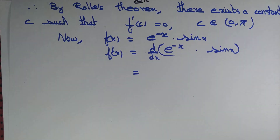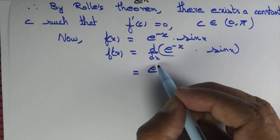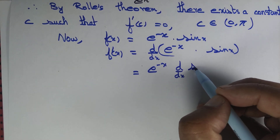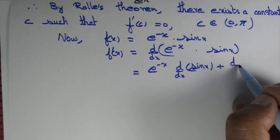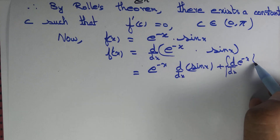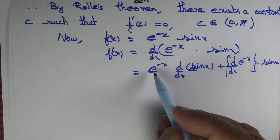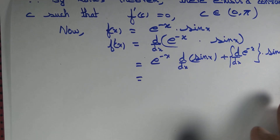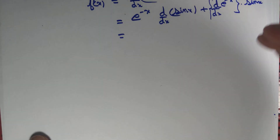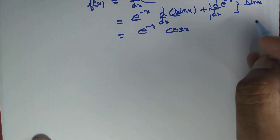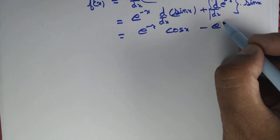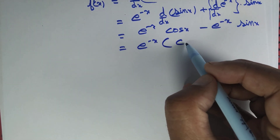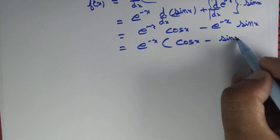It is of the form u·v, so we apply the product rule: keep the first function as it is and multiply by the derivative of the second, then add the derivative of the first multiplied by the second. So f'(x) = e^(-x) · cos(x) + (-e^(-x)) · sin(x). Taking e^(-x) as common, we get f'(x) = e^(-x)(cos x − sin x).